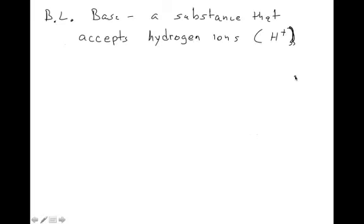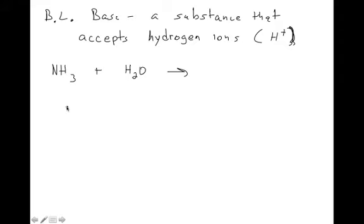A Bronsted-Lowry base is a substance that accepts hydrogen ions — the opposite of an acid. This helps solve the problem of ammonia as a base. When ammonia is placed into water, a hydrogen moves from the water to the ammonia. NH3 accepts a hydrogen ion, and since the hydrogen ion carries a positive charge, when it accepts that hydrogen ion it becomes positive.